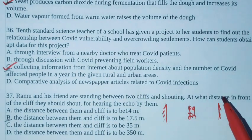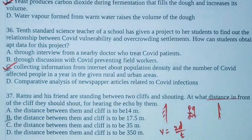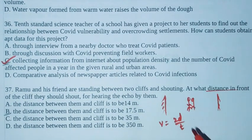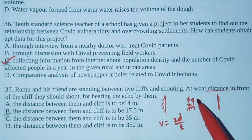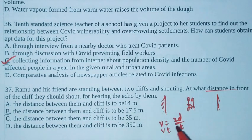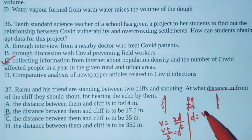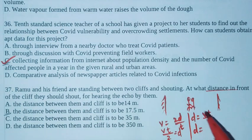We have to find the distance. We know the formula v is equal to 2d by t, that's 2d by t. Distance by time and 2d because sound travels forward and reflects back, that's 2d. We need to modify the formula to find distance. d is equal to vt by 2, so the correct formula for this sum is d equals vt by 2.